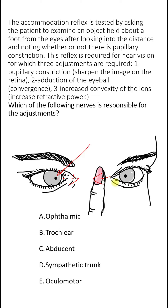The increased convexity of the lens increases the refractive power in order to focus on near objects. So the question is: which nerve is responsible for all of these adjustments?